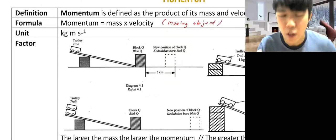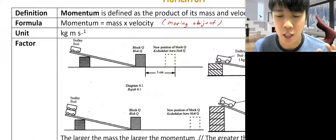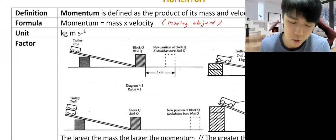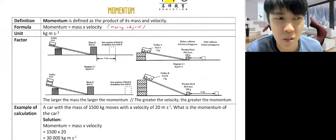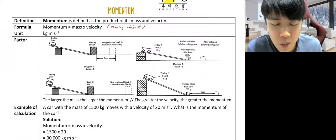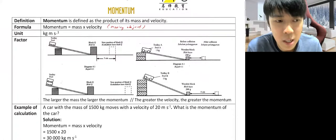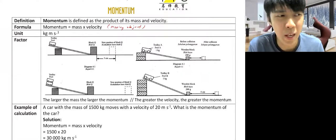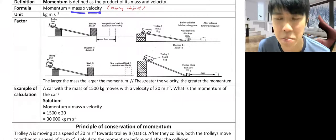Momentum only applies to moving objects. If an object exists but doesn't move — zero. If there's no mass but it's moving — that's not an object anymore. So momentum only applies to moving things, not stationary things. If you are sitting still on your chair, your body doesn't have momentum. But if you start standing up and running outside, that is when your body has momentum. We have two factors affecting momentum: mass and velocity.